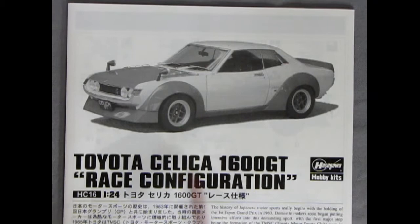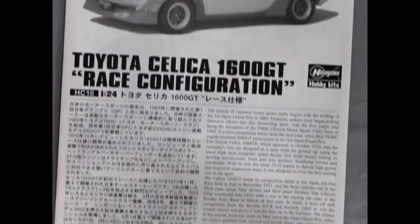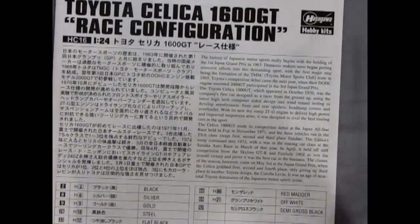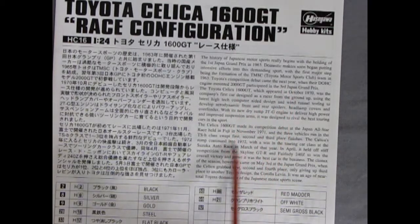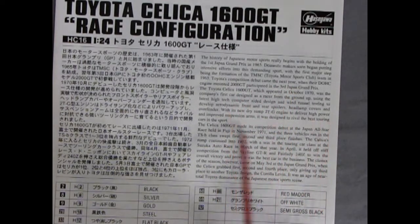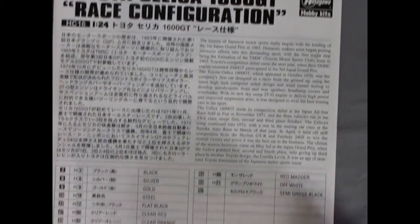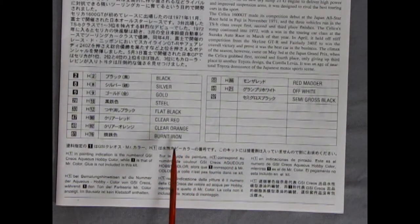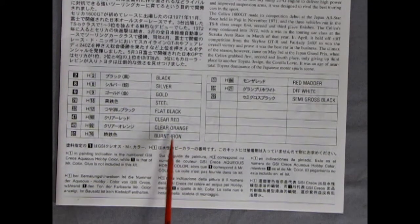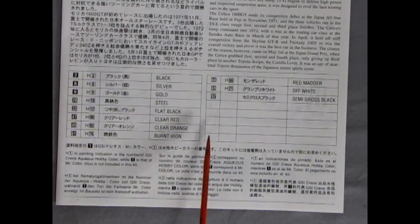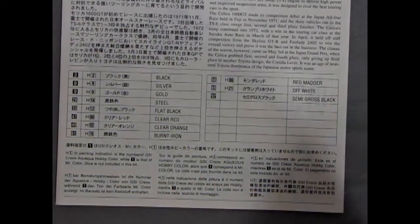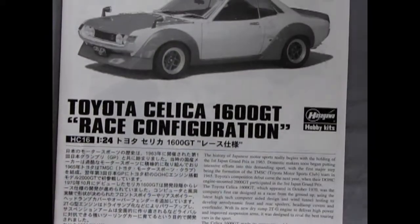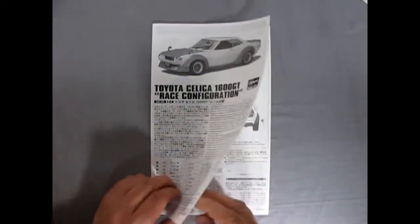Here we have our instructions for the Toyota Celica 1600 GT in race configuration. You can see the nicely built up model kit. What's also cool about this is it's in Japanese as well as in English, being Hasegawa. I'm going to type this out and leave it in the description below so you can read everything. We also have our paint code call outs which I believe would be Tamiya paints or Gunze Sangyo colors.